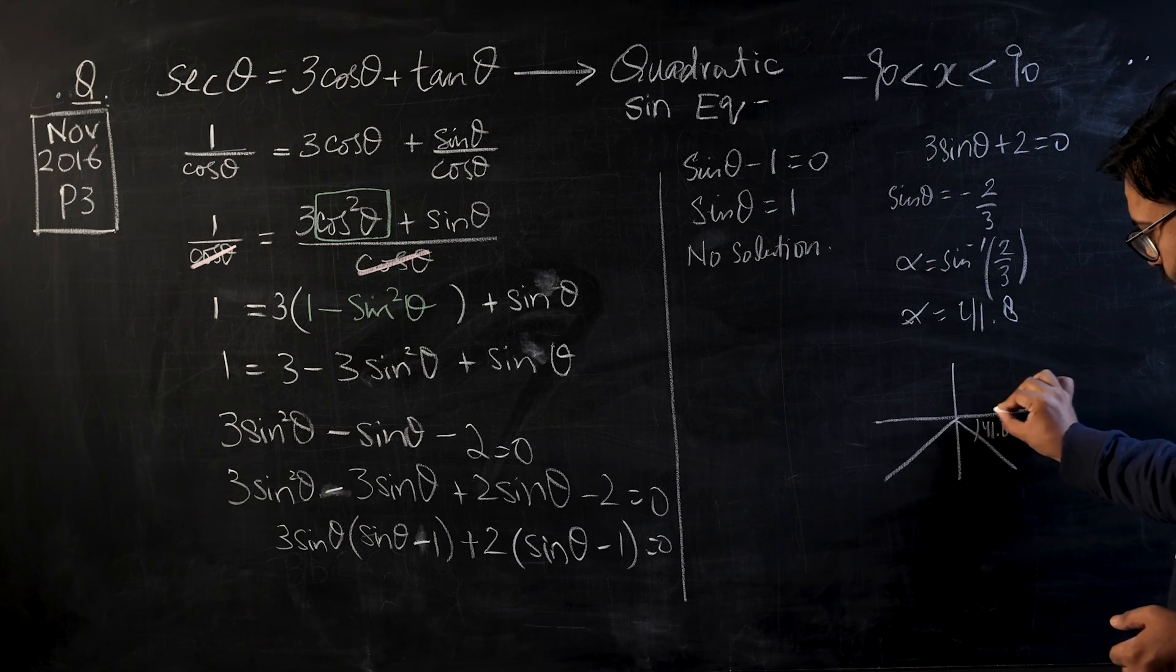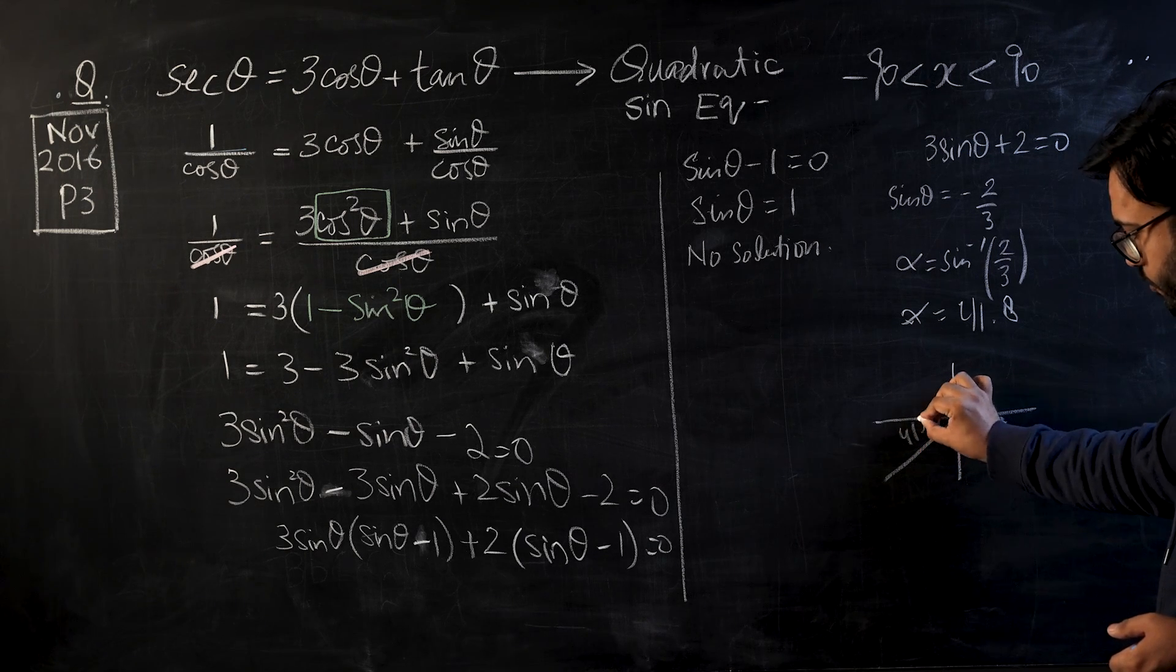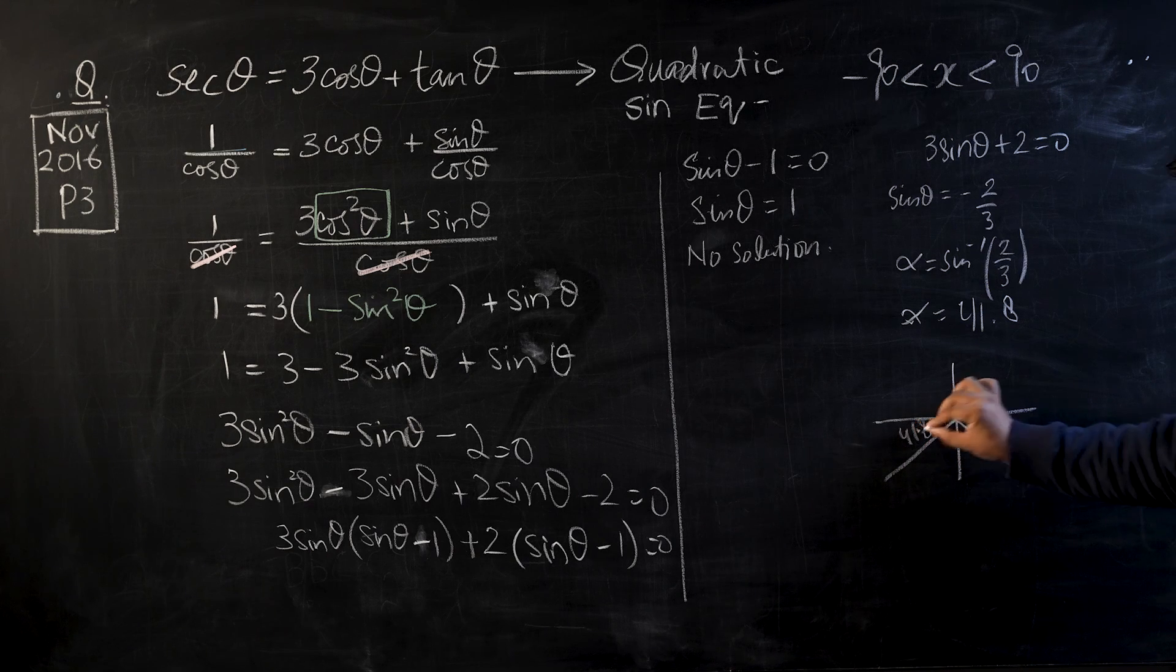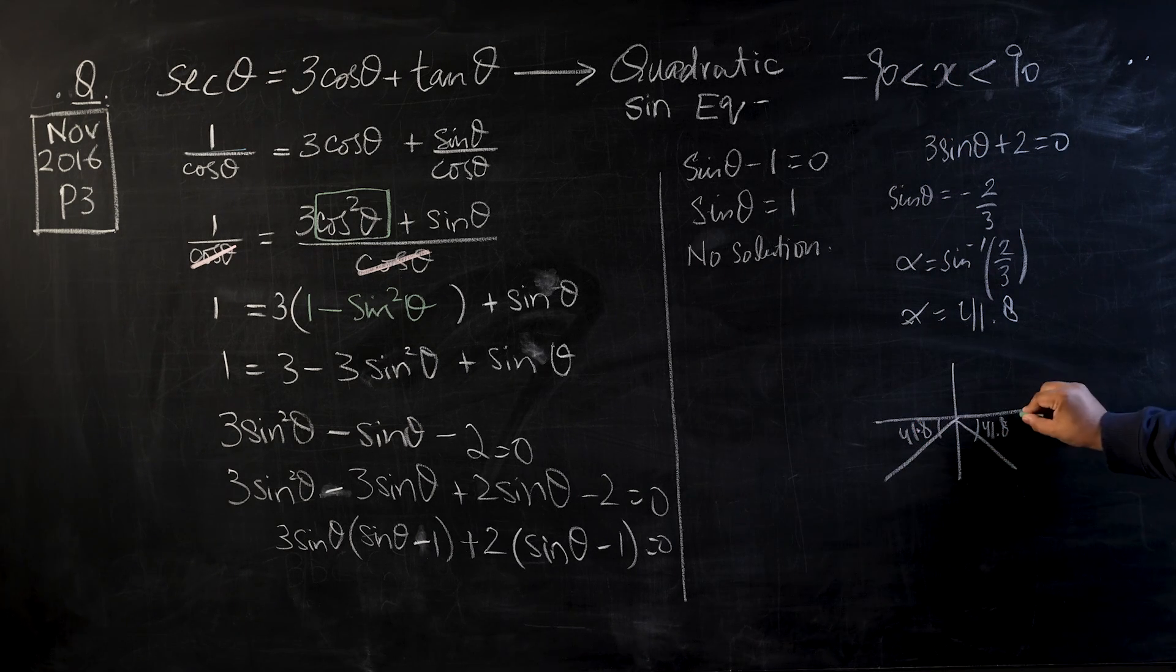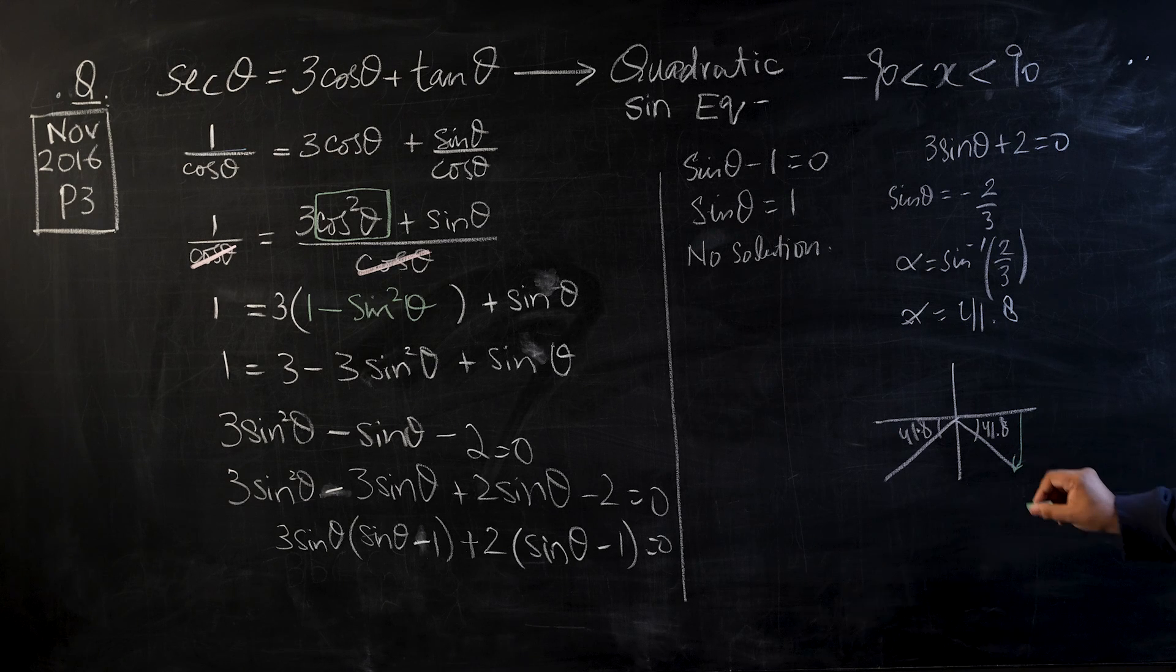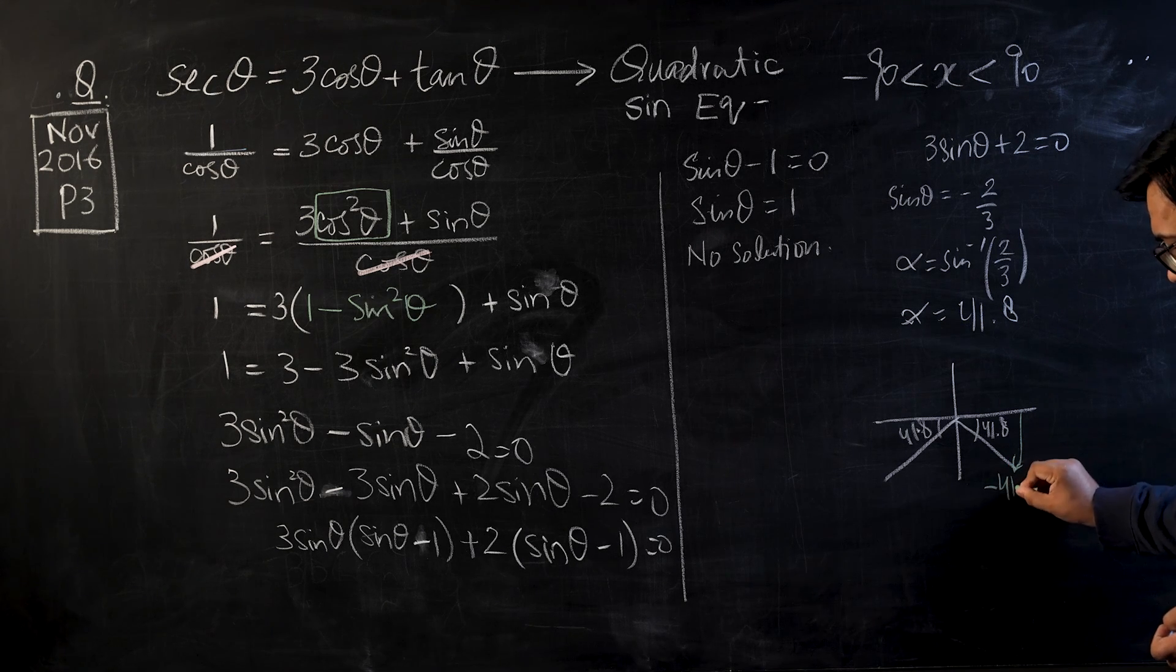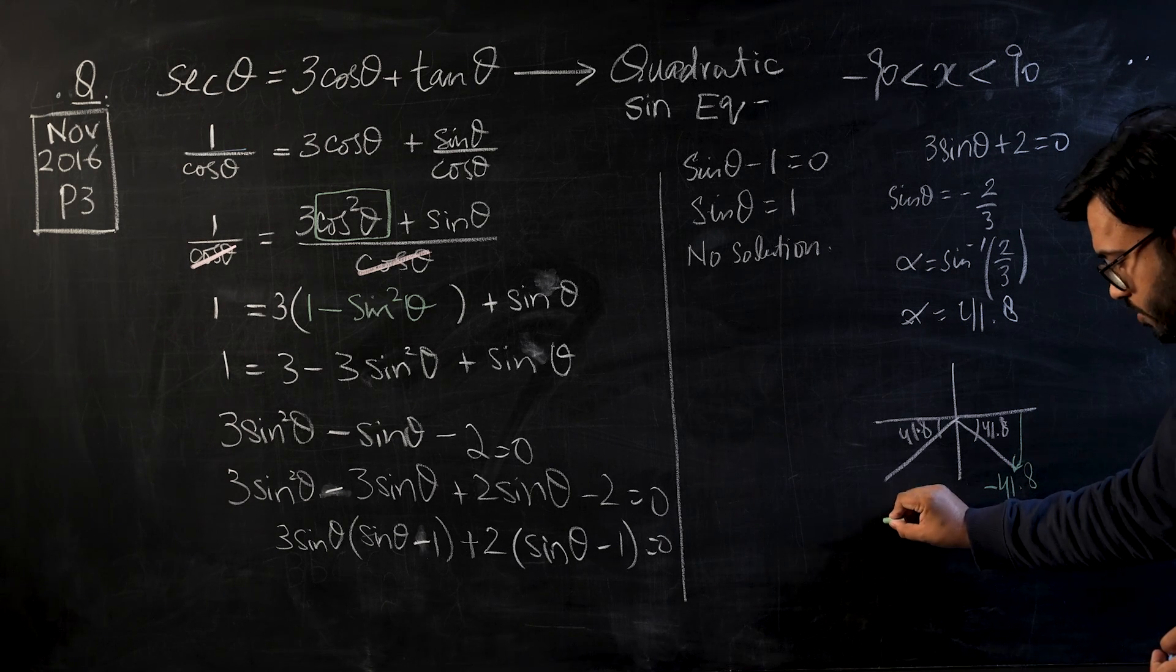Now we know that sine is negative, that means we have to be in the third or in the fourth quadrant. This is 41.8, this is 41.8.